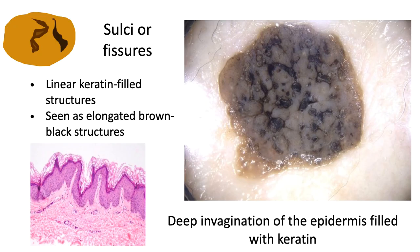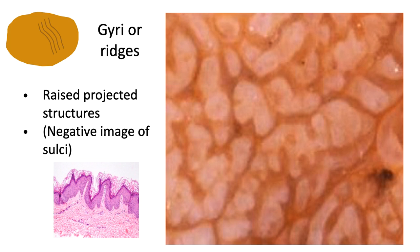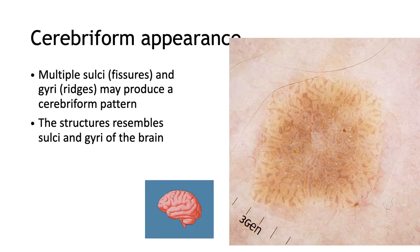The sulci or fissures are linear keratin-filled structures seen as elongated brown-black structures, and they correlate with deep invaginations of the epidermis filled with keratin. The gyri or ridges are the raised projected structures that are the negative image of the sulci — the sulci are the deep invaginations and the top of these invaginations is the gyri or ridges. The combination of these two features is what we call the cerebriform appearance: multiple sulci (deep invaginations) and gyri (the top part), resembling the sulci and gyri of the brain.